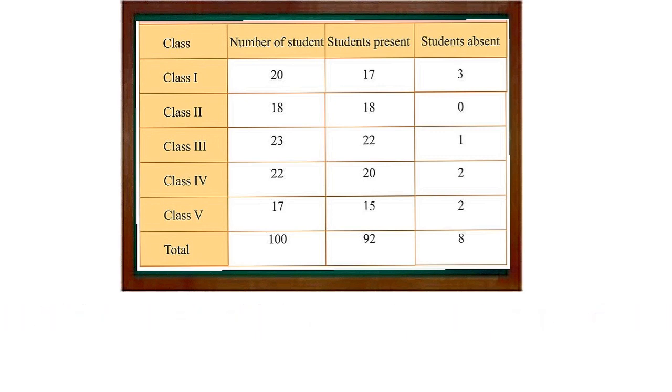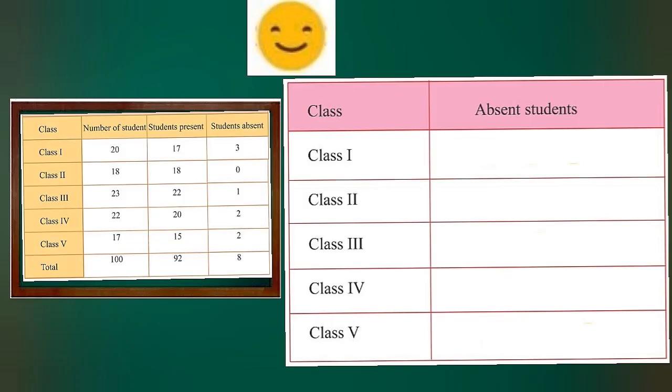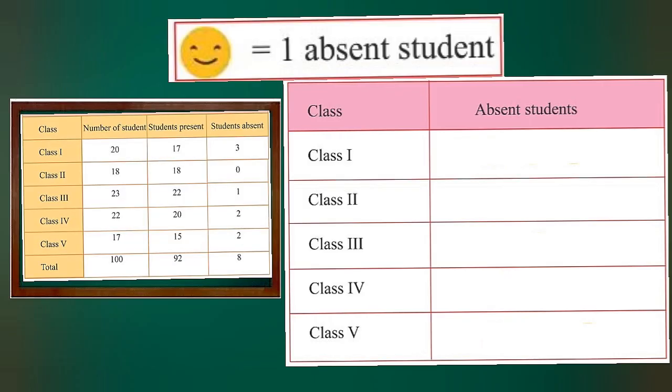Students, now we will make a pictograph for the number of absent students from the table. Here, we use a smiley face as a symbol to represent an absent student. If the number of students is too large, then we can increase the scale — for example, we can use one smiley face to represent 5 or 10 students.